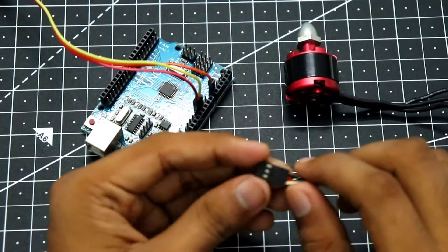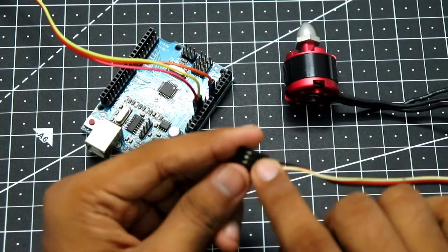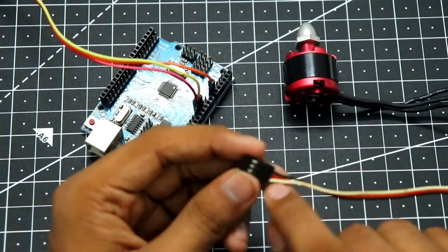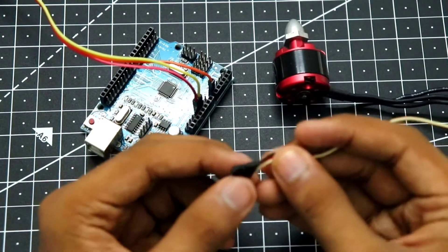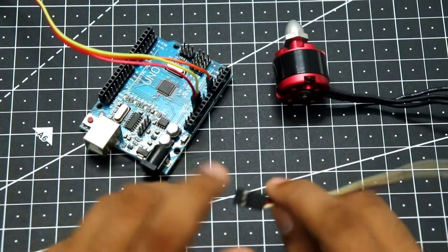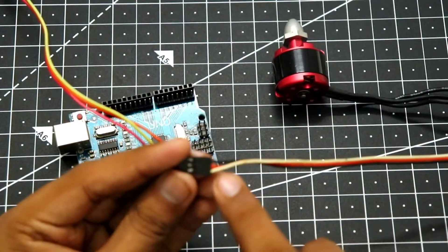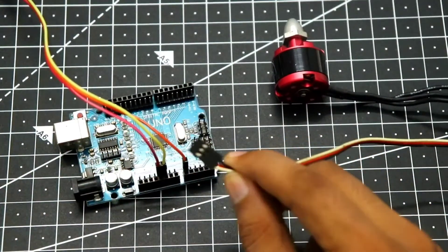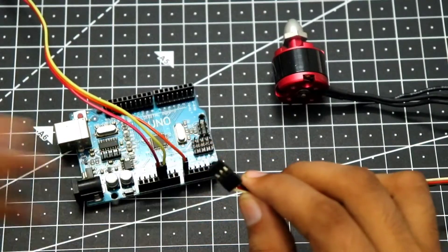Now we can take our ESC connection and connect it to the Arduino. The ESC connection will be the same for the ground and the power. The ground wire will be connected to the ground. The positive wire will be connected to the positive of the Arduino. And the signal pin of the ESC, which is the white wire, will be connected to pin 8 of the Arduino. So now let's connect them.